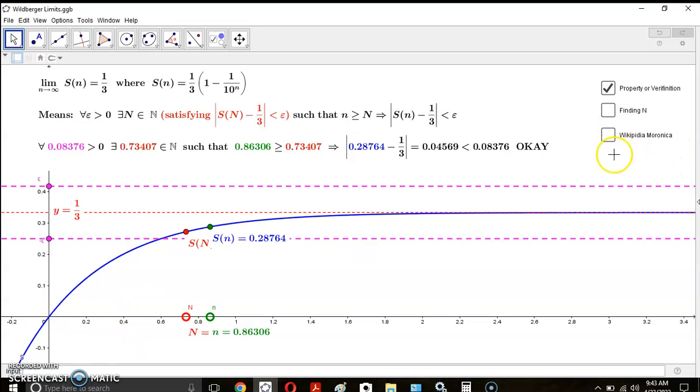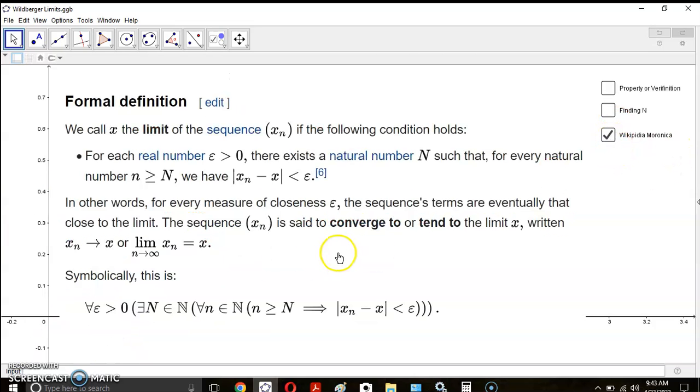Now, what the mainstream definition—it's not a definition, as I said, it's a property—says is this: for each real number—first of all, there's no such thing as a real number, but let's leave that alone for the time being—it should actually say for each magnitude epsilon greater than zero, there exists a number N, such that for every natural number n greater or equal to N, we have that the distance between the terms x_n and x is less than epsilon. Even this so-called definition here is not strictly speaking clear because it doesn't say anything about this natural number N.